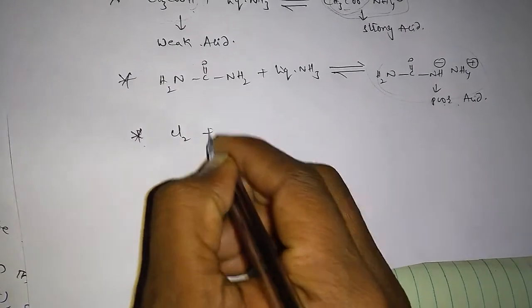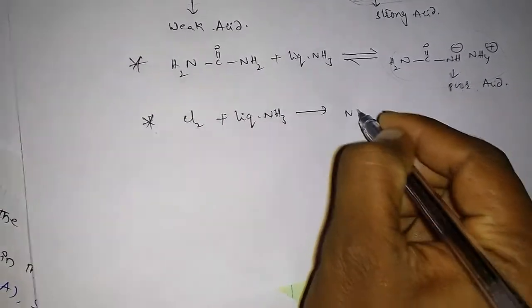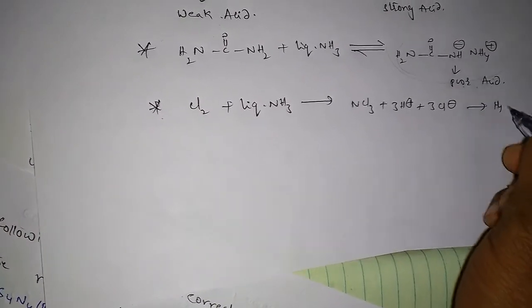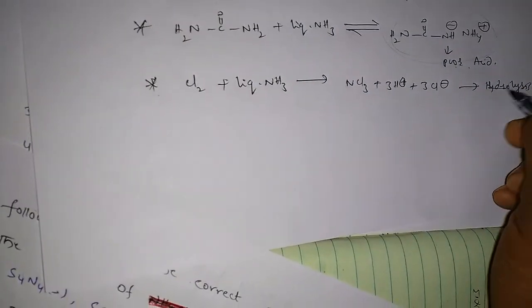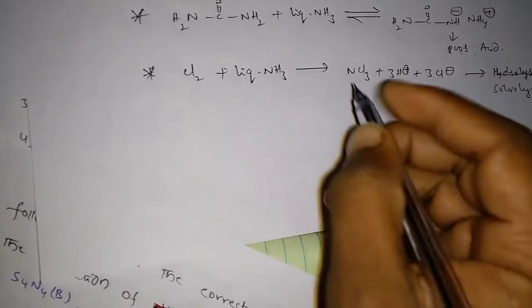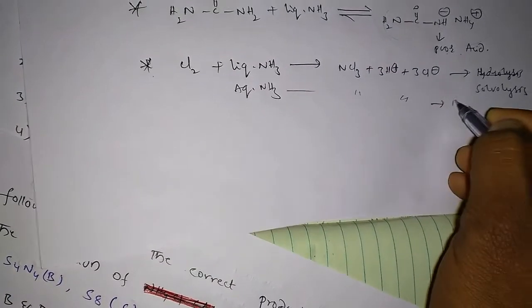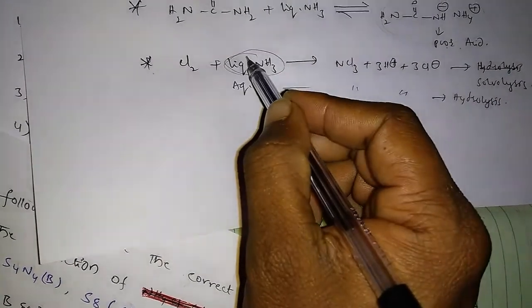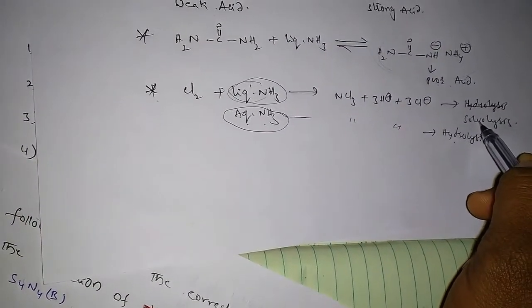And when chlorine reacts with liquid ammonia, it forms NCl3 plus 3H+ plus 3Cl-. So this is simply called as, sorry, this is sololysis. Sololysis takes place. So if we take aqueous NH3 here, this reaction is hydrolysis reaction. Sololysis means simply here in liquid ammonia there is no water. But in aqueous ammonia there is water. That's why it is hydrolysis. This is simply sololysis.